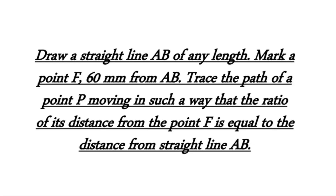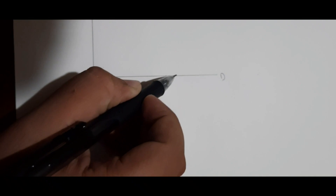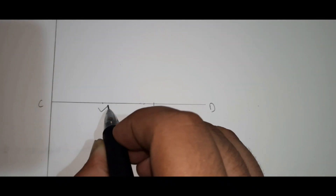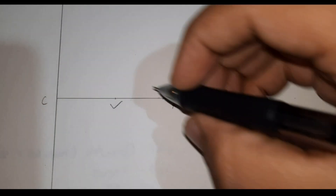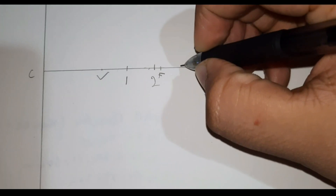The next question is: draw a straight line AB of any length, mark a point F 60mm from line AB, and trace the path of a point P moving such that the ratio of its distance from point F to the distance from straight line AB equals 1. This is line AB — here I have taken it 12cm. CD is the perpendicular bisector of AB and marking point F at 6cm. This is point V, the midpoint of C and F.